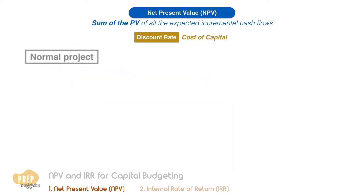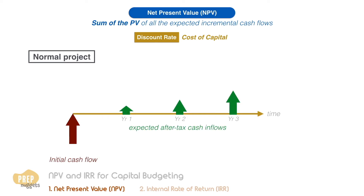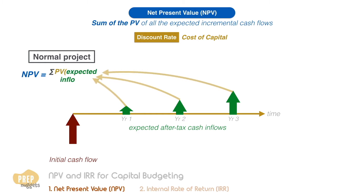For a normal project with an initial cash outflow followed by a series of expected after-tax cash inflows, the NPV is the present value of the expected inflows minus the initial cost of the project.